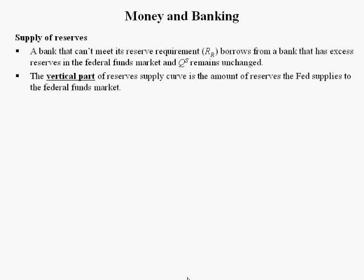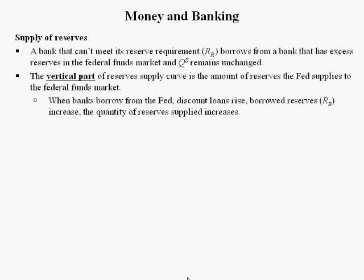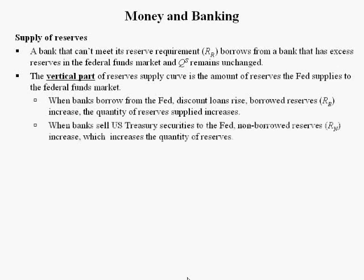The vertical part of the reserve supply curve is the amount of reserves the Fed supplies the federal funds market. When banks are lending between themselves, the quantity of reserves doesn't change. But when banks borrow from the Fed, the quantity of reserves changes. When the banks borrow from the Fed, discount loans rise, borrowed reserves increase, and the quantity of reserves supplied increases. When banks sell U.S. Treasury securities to the Fed, non-borrowed reserves increase, which increases the quantity of reserves. Hence, the supply of reserves — the vertical part — is the sum of non-borrowed reserves and borrowed reserves.